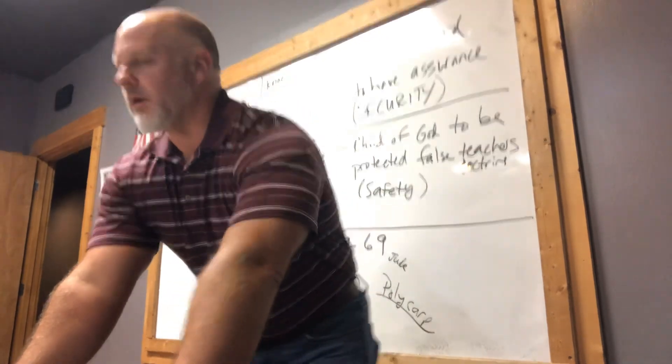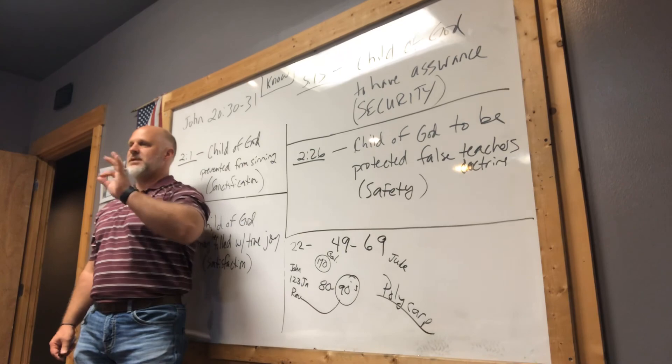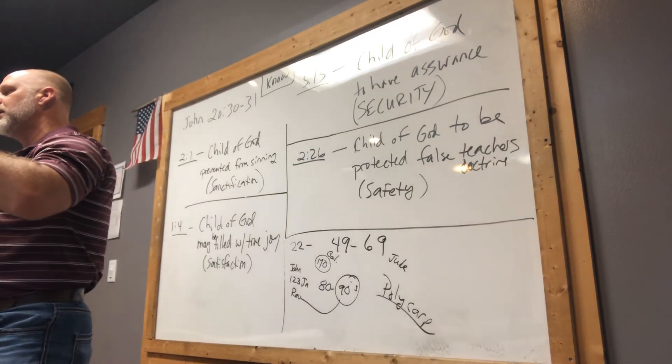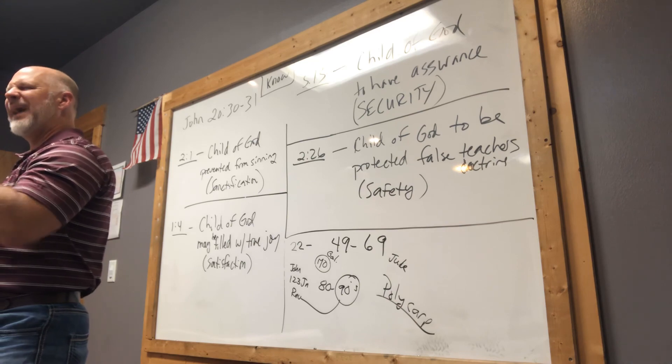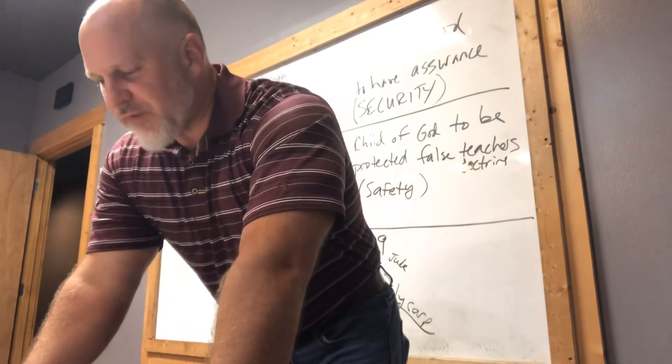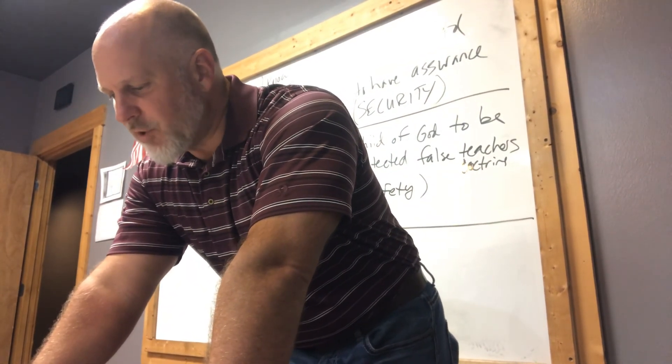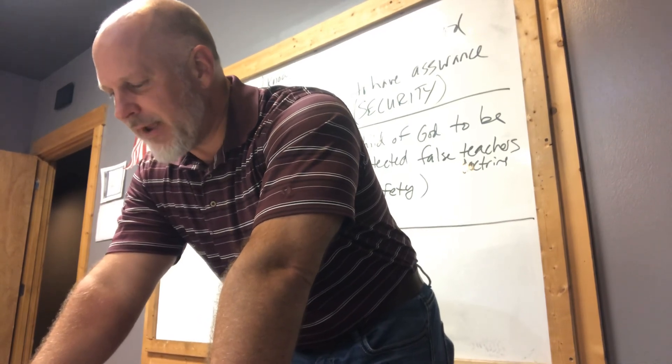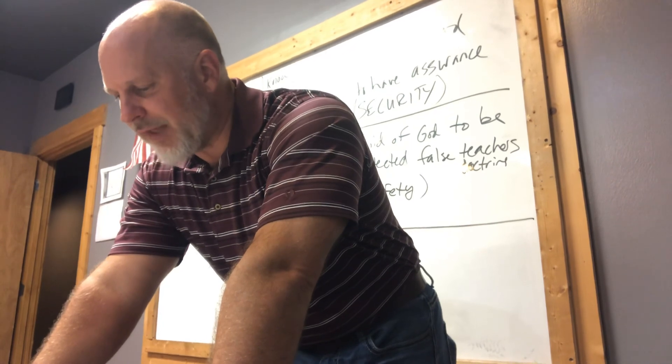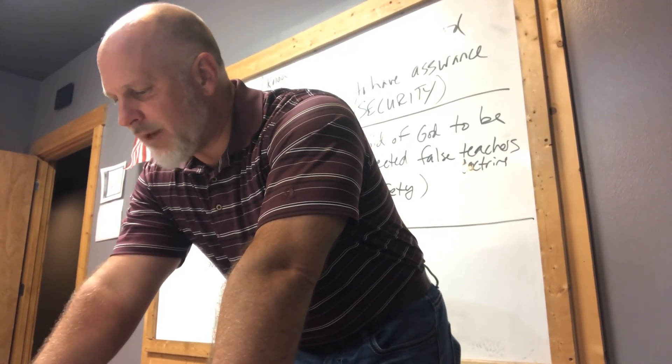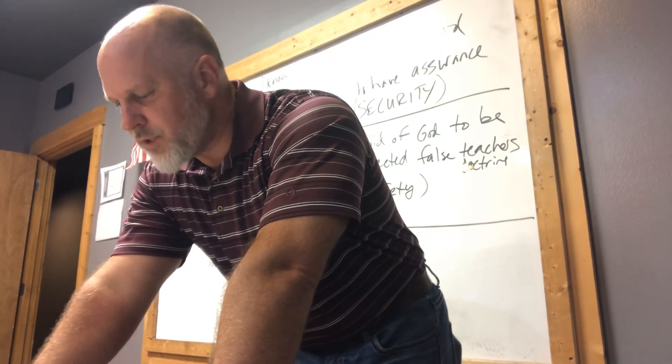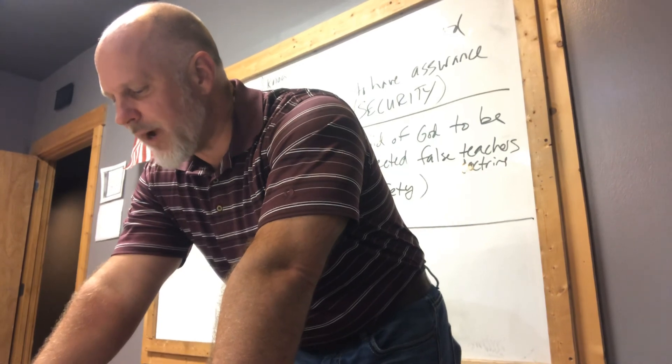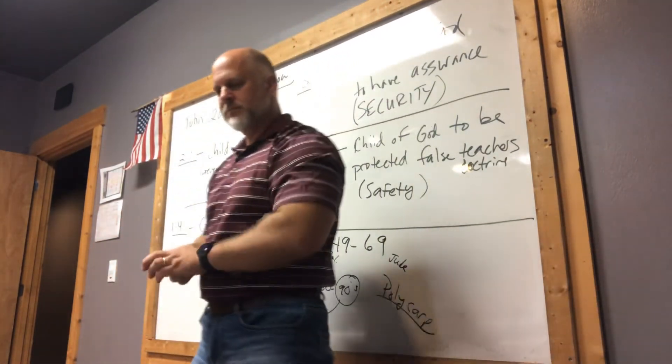Chapter one. So here, I'm going to read these out loud. What was from the beginning, what we have heard, what we have seen with our eyes, what we have looked at and touched with our hands concerning the word of life, and the life was manifested, and we have seen and testify and proclaim to you the eternal life, which was with the Father and was manifested to us. What we have seen and heard, we proclaim to you also, so that you too may have fellowship with us, and indeed our fellowship is with the Father and with his Son, Jesus Christ. These things we write so that our joy may be made complete.